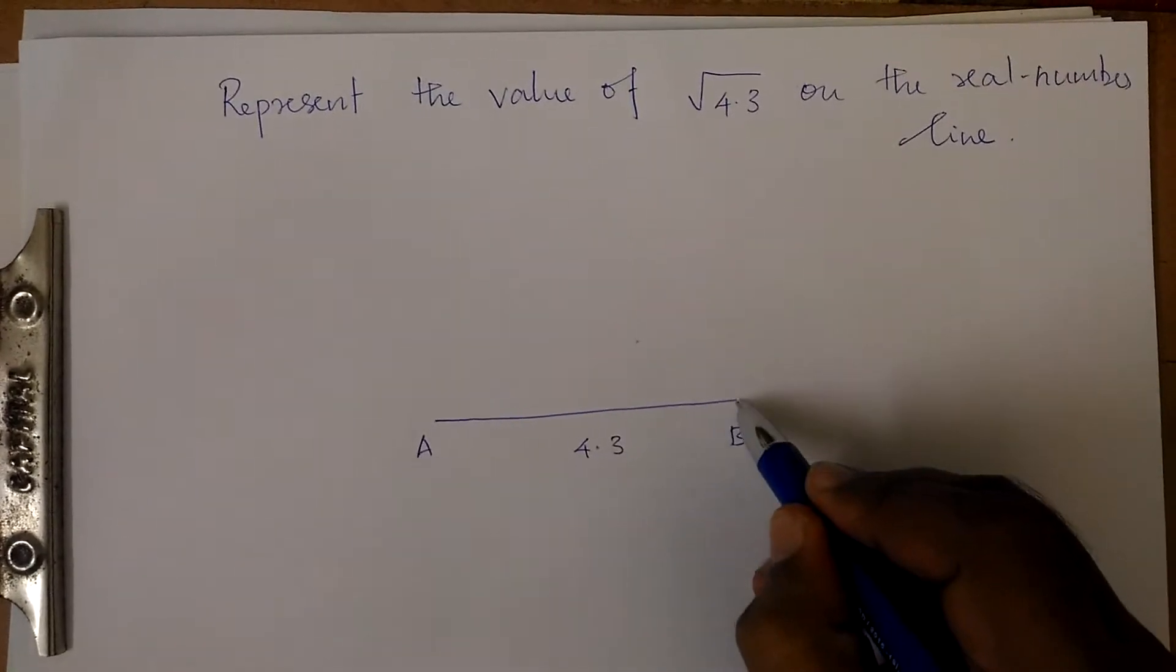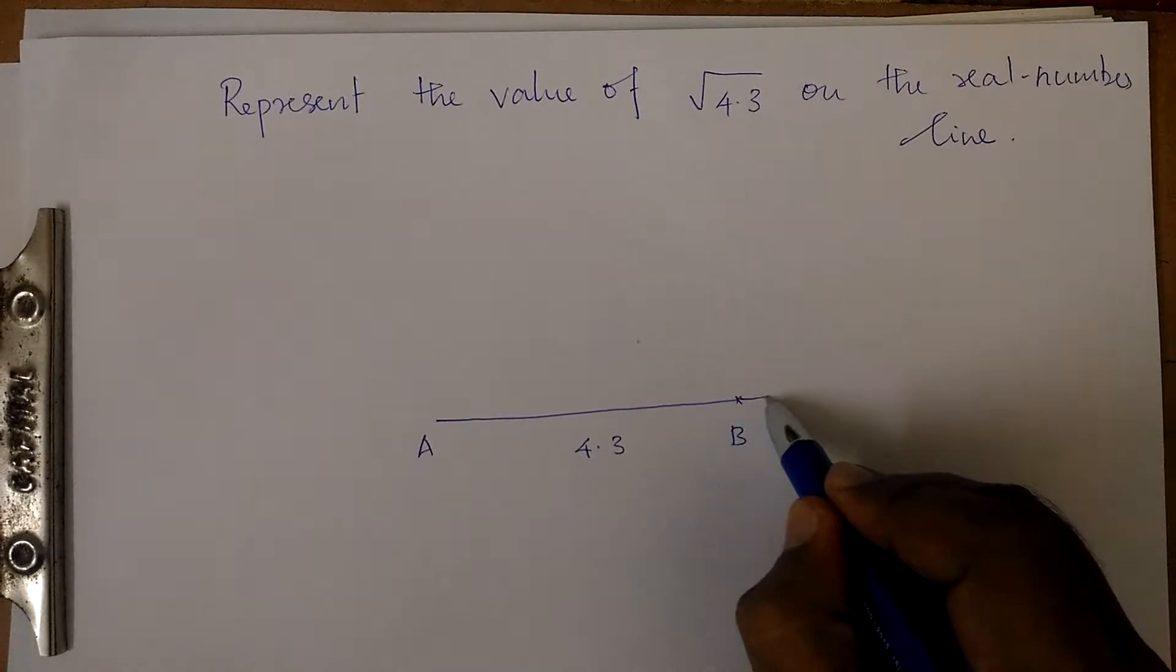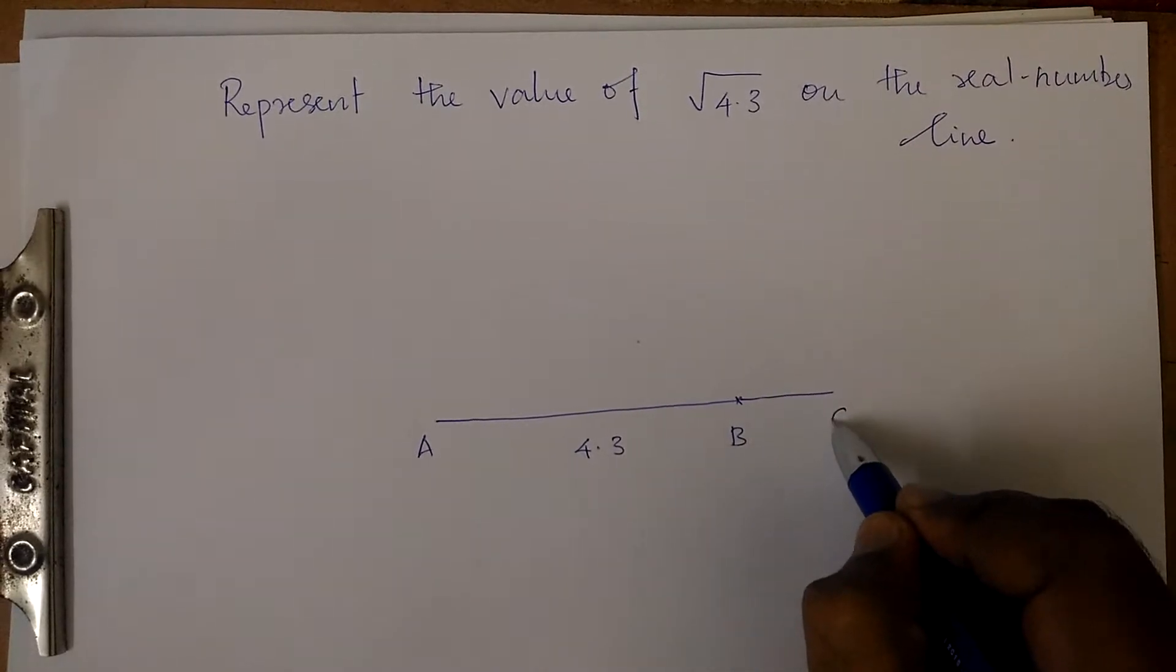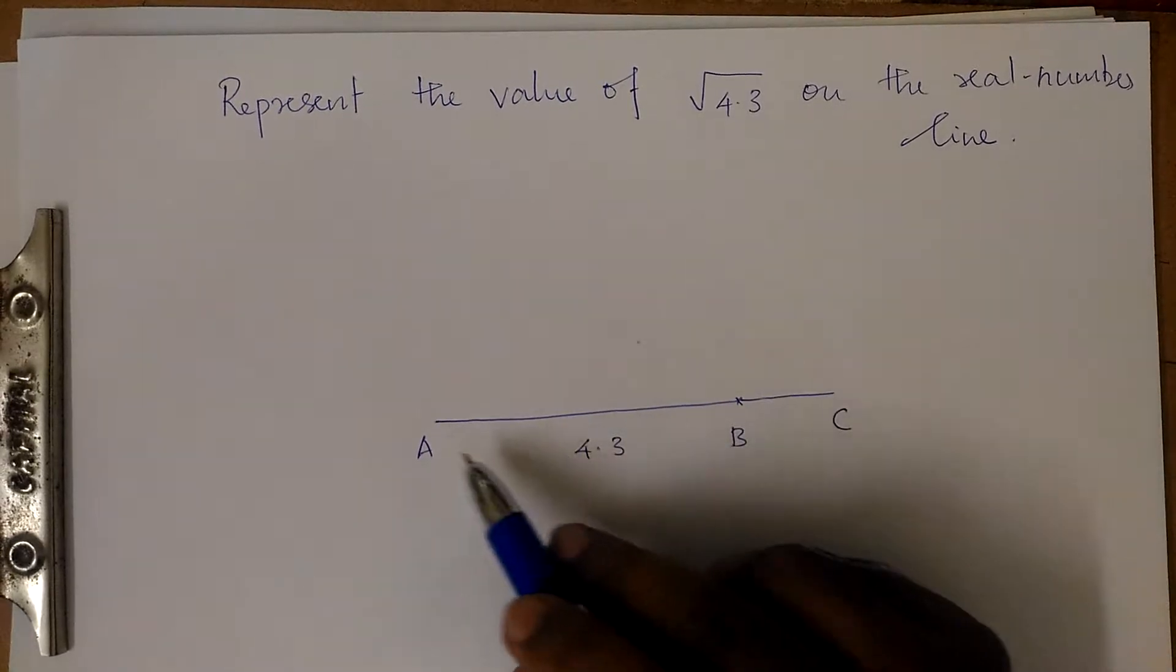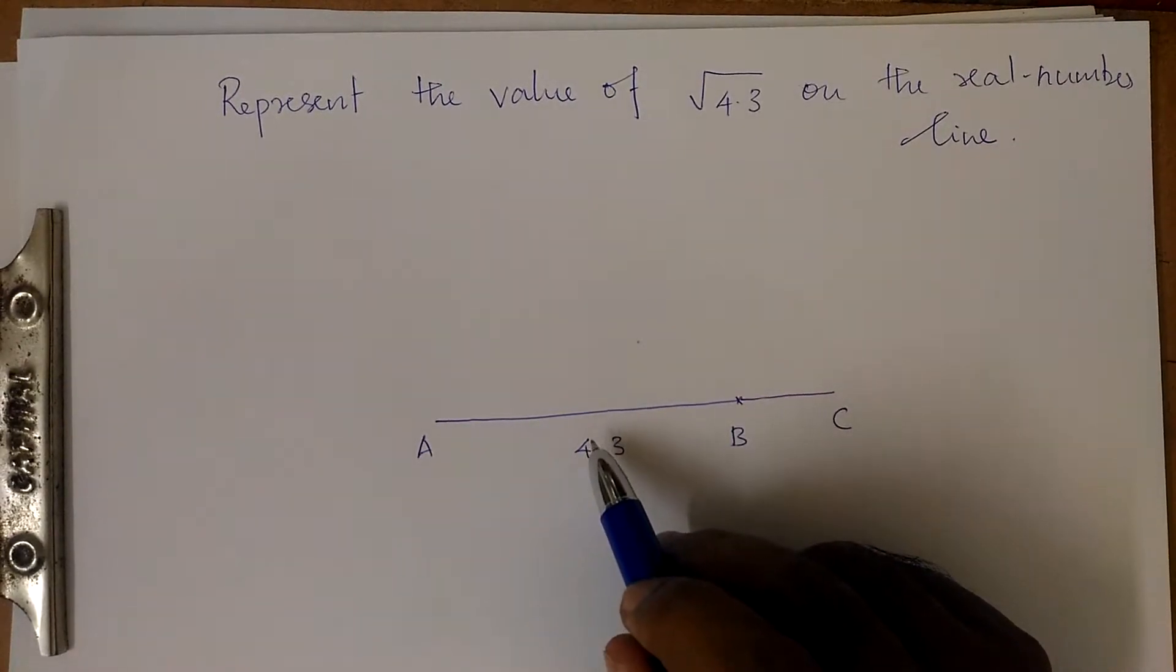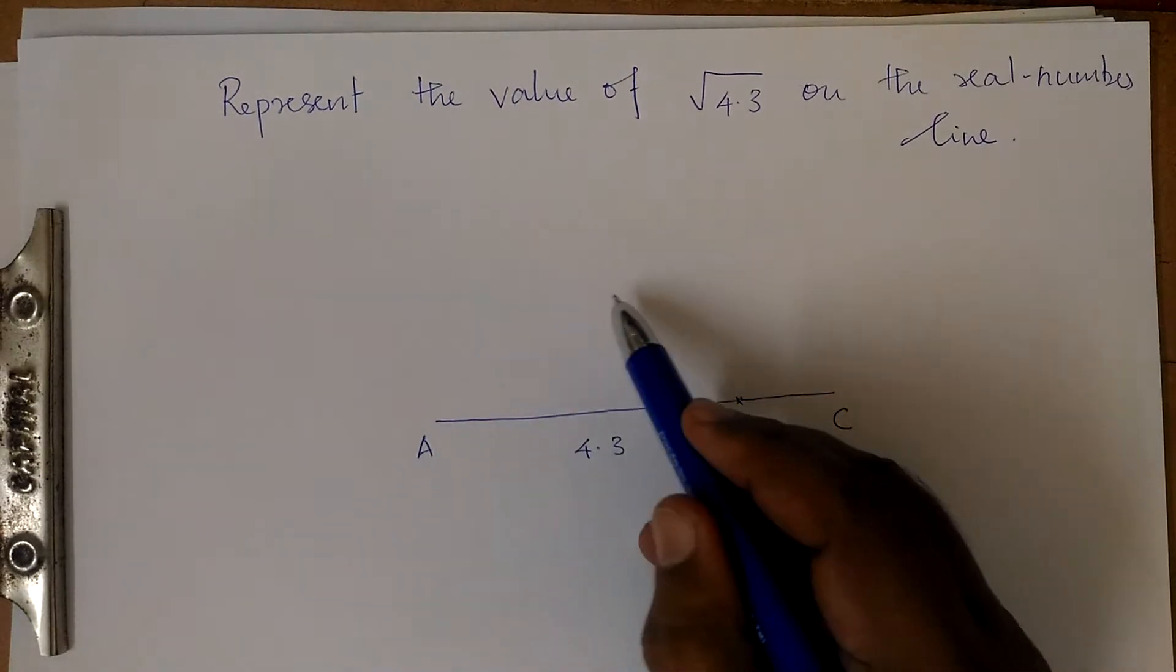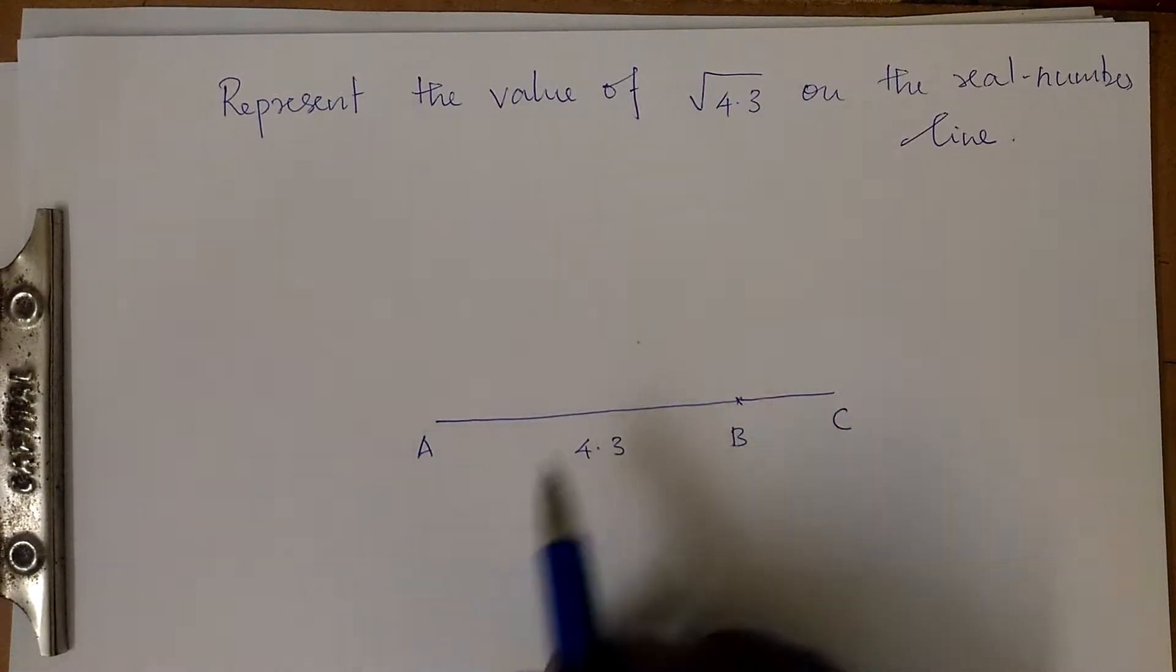Now extend B by 1 centimeter to reach C. The next step is to find the midpoint of AC. To do this, use a compass with a distance more than half of AC.